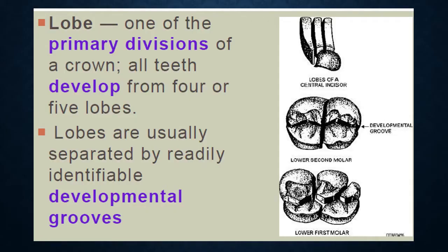What is a lobe or center of calcification? Teeth are usually developed from different parts, which are known as the primary parts of the teeth. During tooth development, these parts join together or coalesce to form the tooth. So teeth are developed in major chunks, and in later stages of development, these chunks join together.